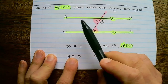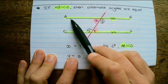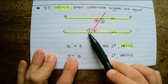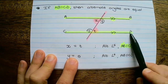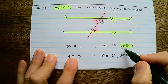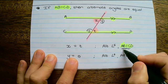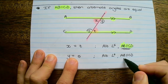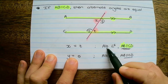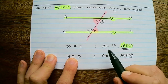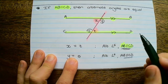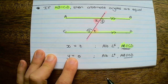So when we use a property found with parallel lines, we must always state those parallel lines. This applies to ALT angles, corresponding angles, and co-interior angles.